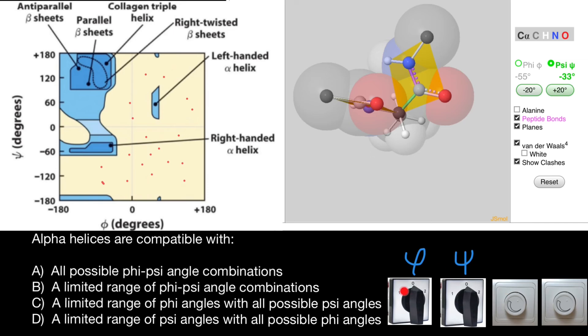When we know combinations of such angles, we can predict that such angles can happen in certain secondary structures of the protein, for example, in right-handed alpha helix, or left-handed alpha helix.